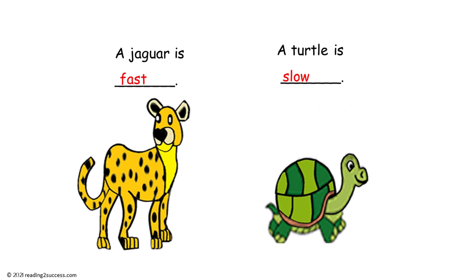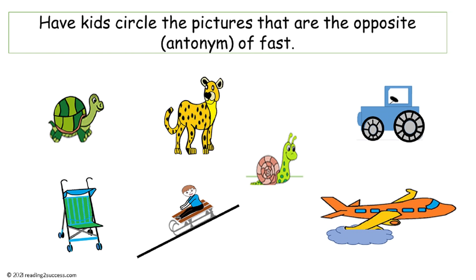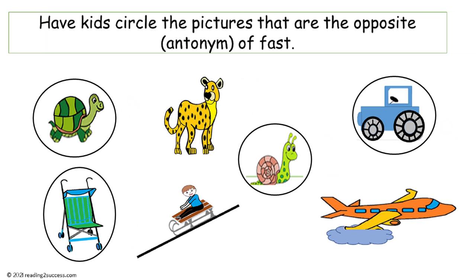Now have kids read the sentences for the antonyms fast and slow. A jaguar is fast; a turtle is slow. Now have kids circle the pictures that are the opposite, the antonym of fast — so kids are looking for all the pictures that show something slow. The pictures that show something slow are a turtle, a snail, a tractor, and a stroller.